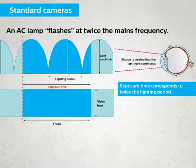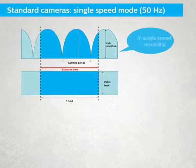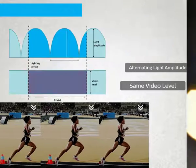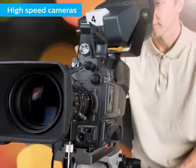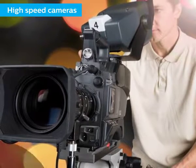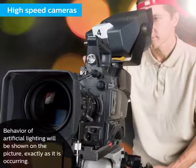The exposure time of a standard camera corresponds to twice the lighting period. Therefore, a standard camera is integrating each field with an equal amount of light. In single-speed recording, the light source amplitude is alternating, but each field still has the same video level. However, when shooting with a high-speed camera in slow motion or ultra-slow motion, the behavior of artificial lighting will be shown on the picture exactly as it is occurring.